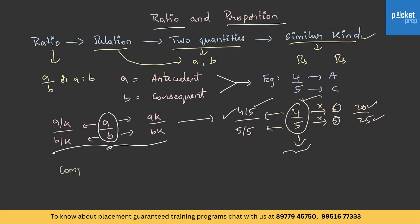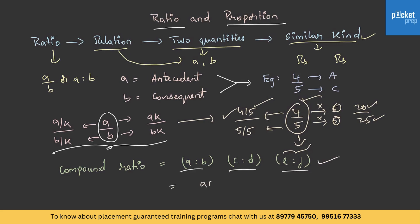Let's understand the concept of compound ratio. Suppose there are three ratios given: A is to B, C is to D, and E is to F. In order to find the compound ratio of these three ratios, we need to find the product of antecedents to that of consequents. Here A into C into E are the product of antecedents, and B, D, F are the product of consequents. By using this formula, we can find out the compound ratio.